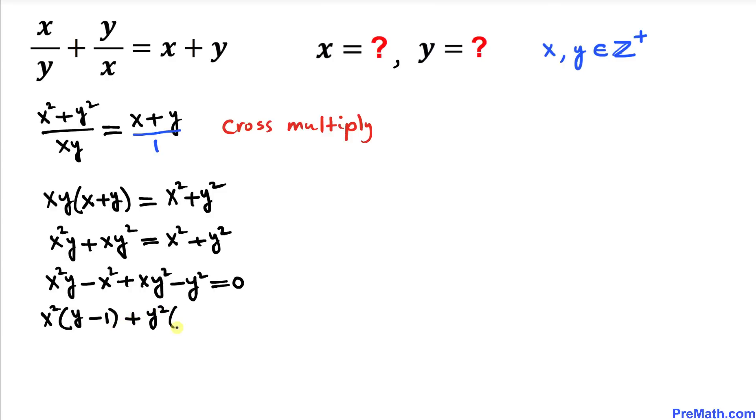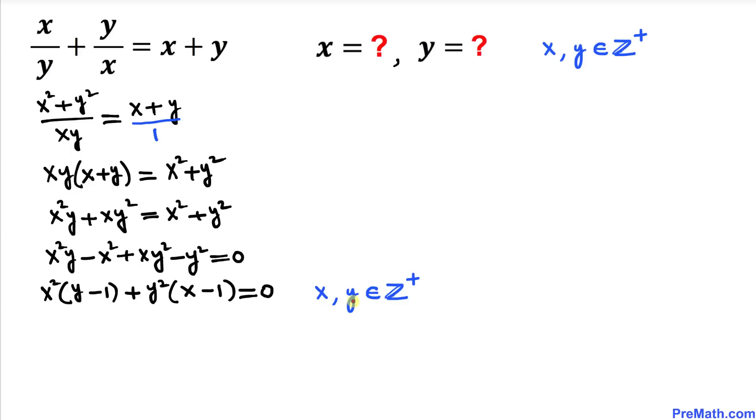...on the second ones, we take out y squared, so we end up with y squared (x minus 1) equals 0. Now we know that x and y are positive integers, so that means x squared cannot equal 0. Likewise, y squared can't equal 0. So the only way this equation can equal 0 is if y minus 1 equals 0 and x minus 1 equals 0.